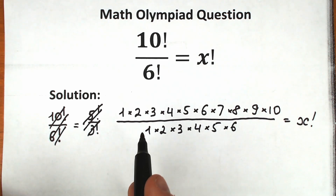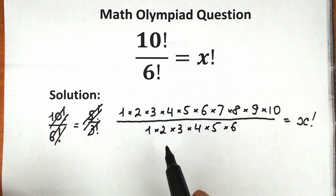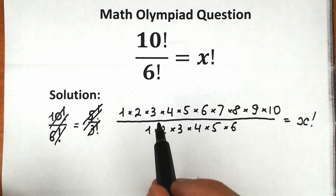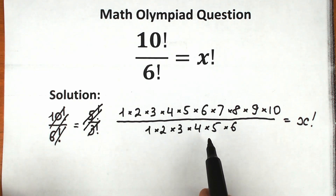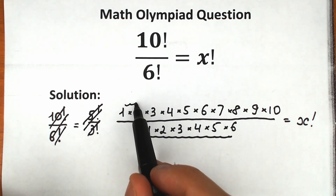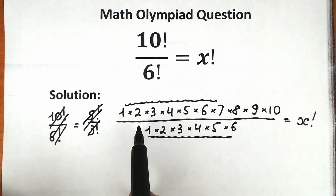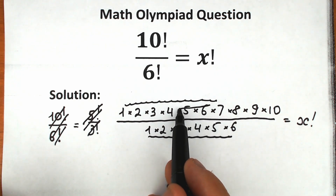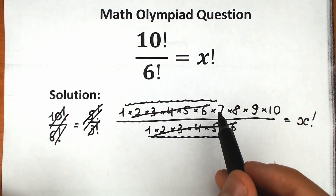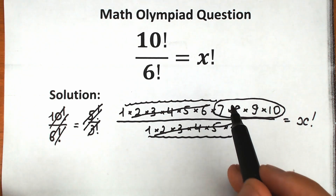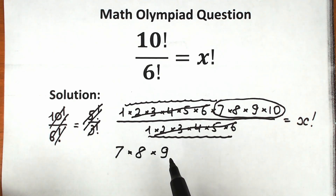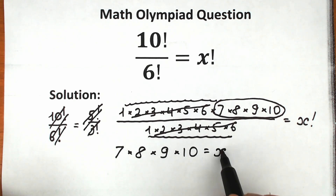Now we have a product in our numerator and a product in our denominator, so we can easily find common values and cancel them. The denominator is the product from 1 to 6, and we have the same product in our numerator, so we cancel it. What do we still have? We're left with 7 × 8 × 9 × 10 = x factorial.